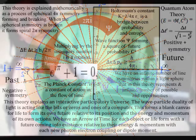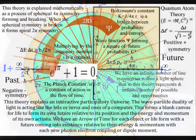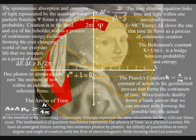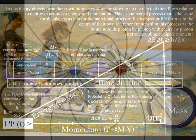The future is a continuum with spacetime as an emergent property, with an arrow of time for each object or life form. The future comes into existence relative to their energy and momentum with each new photon-electron coupling or dipole moment.